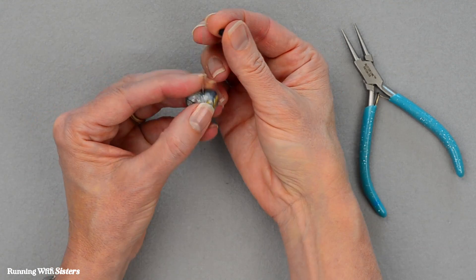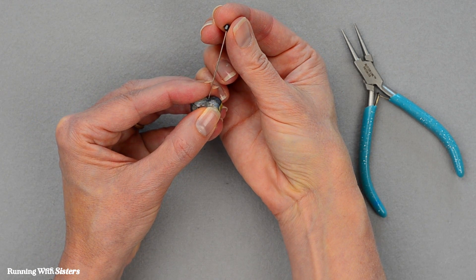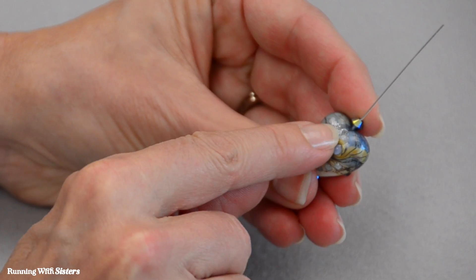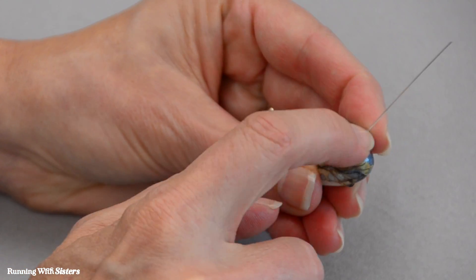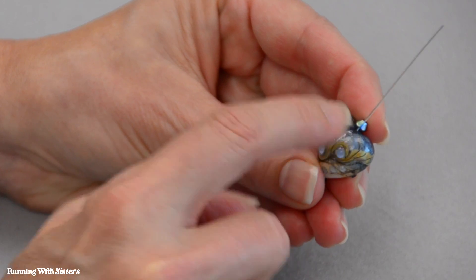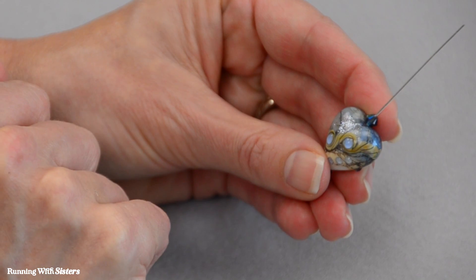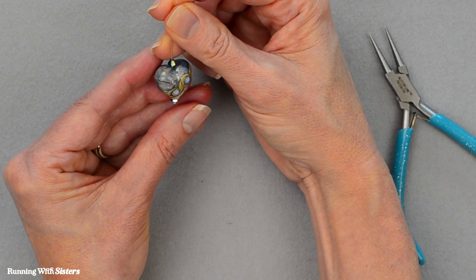And then we've got another bicone that we're going to put on the top of our heart. And that's because the heart itself has a little indentation here at the top and that bicone angle will sit just perfectly in that little heart so none of our wire will show. So that's the start of our pendant.